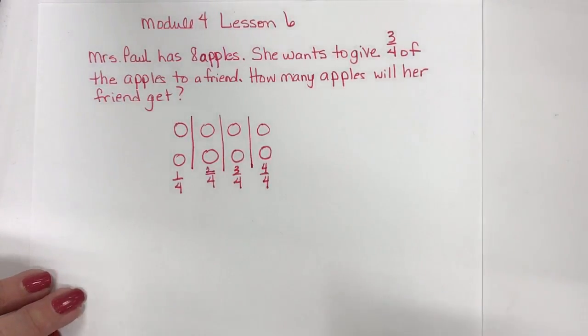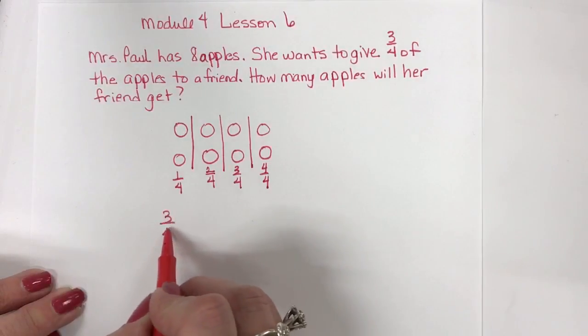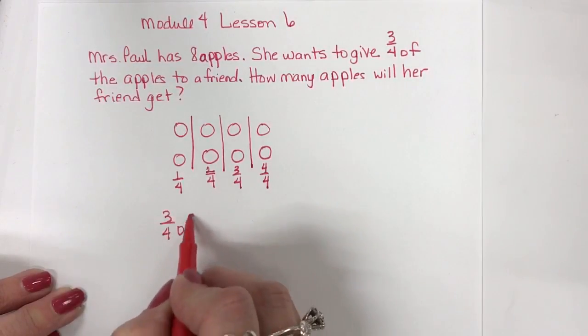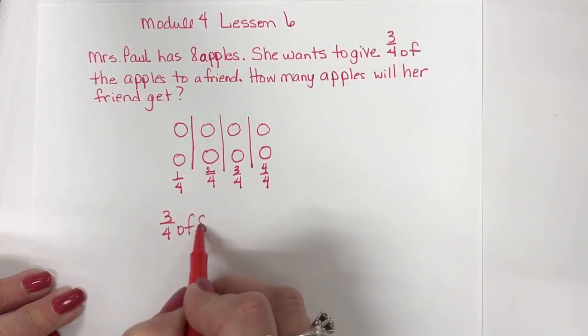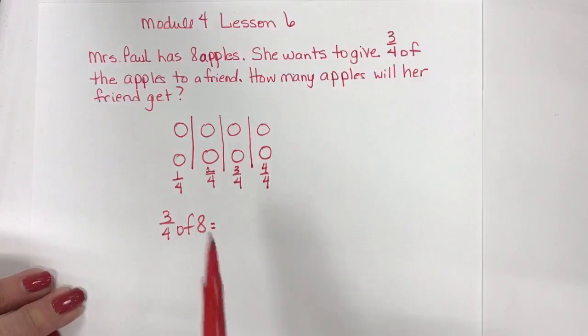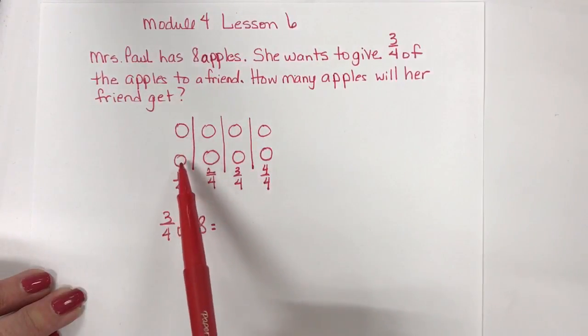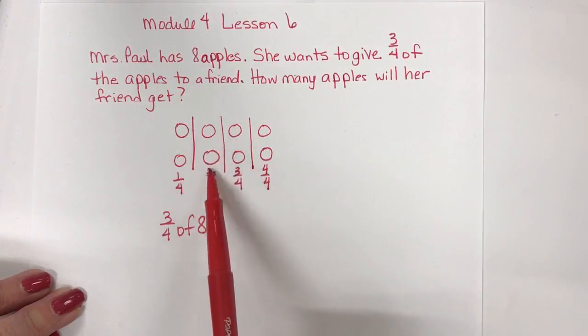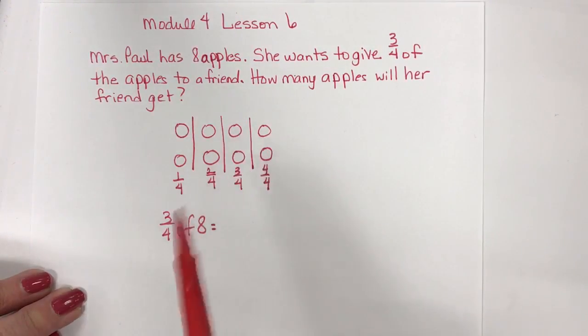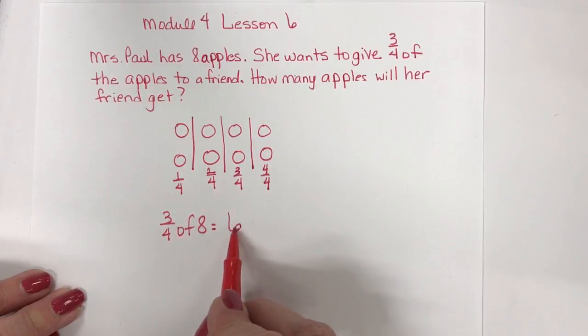So now to find three-fourths of eight, I would know I have one, two, three, four, five, six. It will be six.